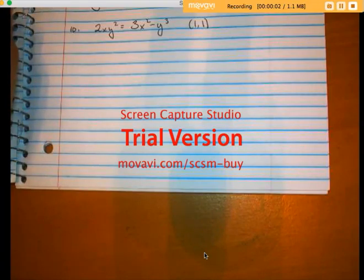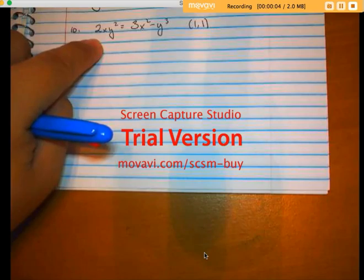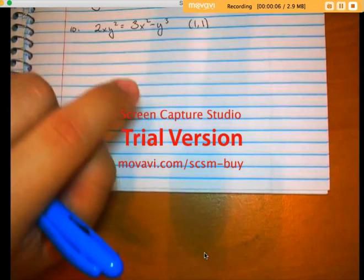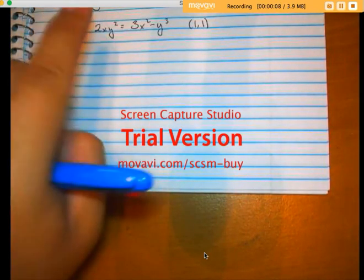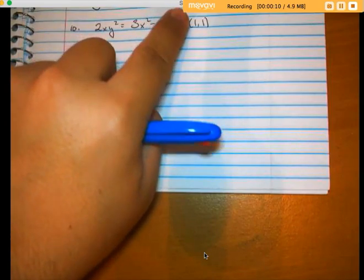Hello and happy spring break. I've got a problem for implicit differentiation. They want me to find the slope of this curve at 1 comma 1. So this is going to take a lot of differentiation. This is the product rule.